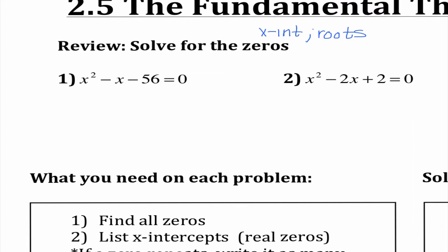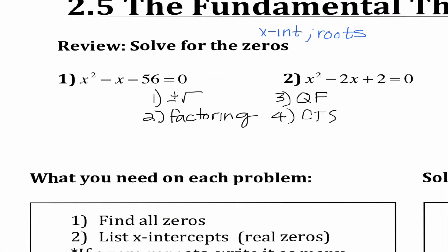Let's review the four different ways that we know how to solve quadratic equations. The first two are super simple: that's when we would square root both sides, or when we would factor. If those methods don't work, then we can always use the quadratic formula or completing the square, and we've spent a bunch of time reviewing those already in this chapter.